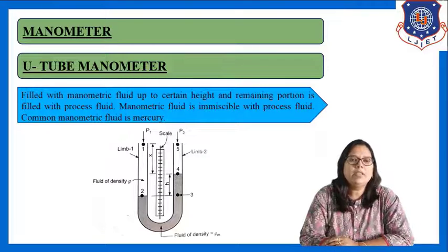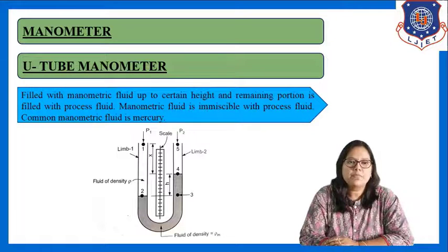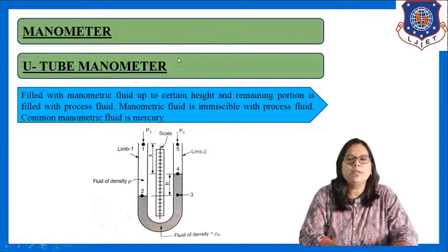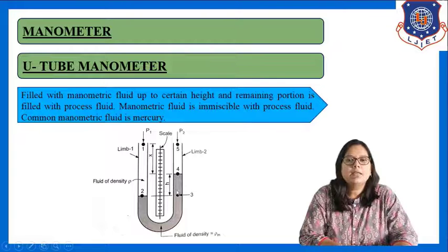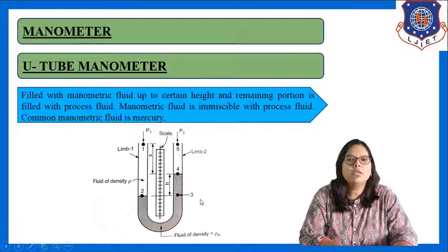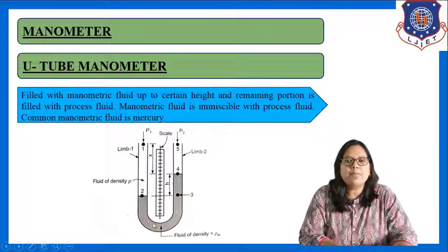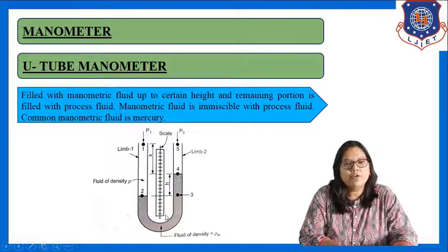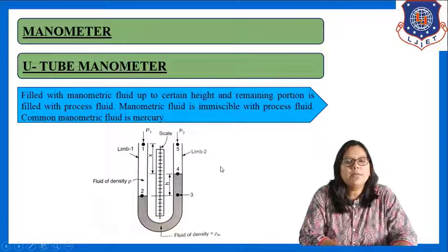Let us start with the first type of manometer, which is the U-tube manometer. You can see the sketch of the U-tube manometer here. As you can see, it is in the shape of a U, and that is why it is known as the U-tube manometer. The dark portion in the figure is the fluid known as manometric fluid, and the white portion is filled with the process fluid.